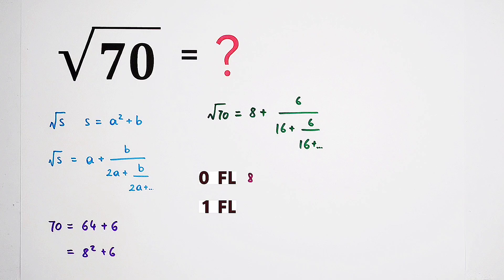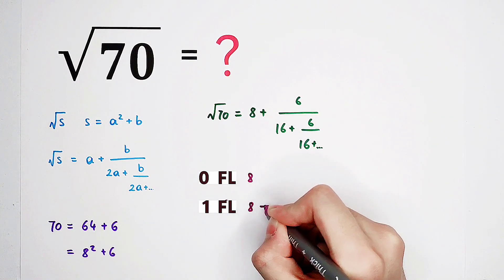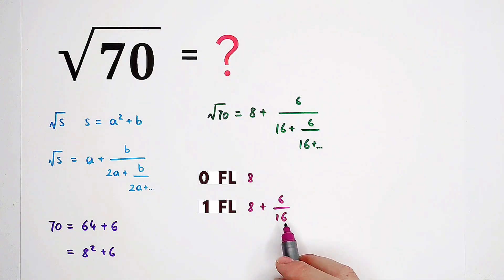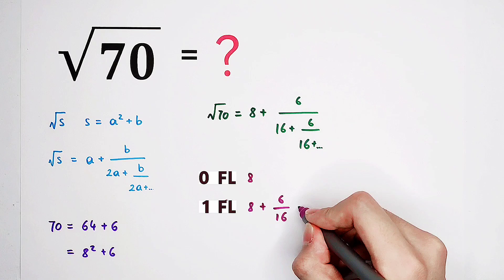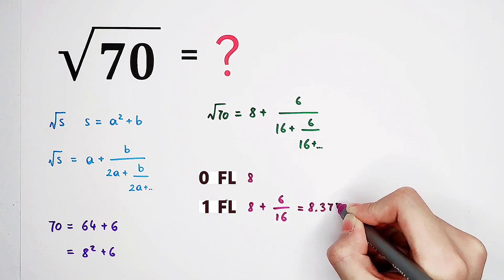Then, if we take one fractional line, what do I mean? So it is approximately equal to 8 plus 6 over 16. And 6 over 16 is 3 over 8, it is 0.375. So it is 8.375.